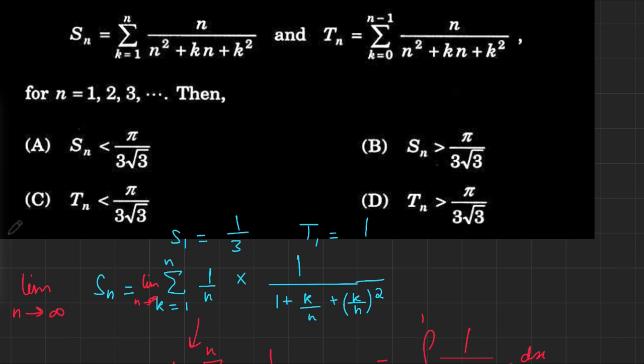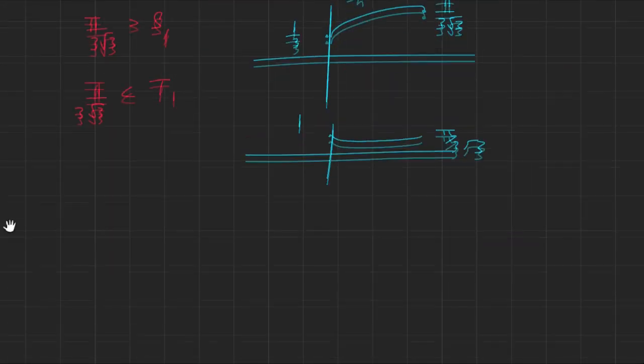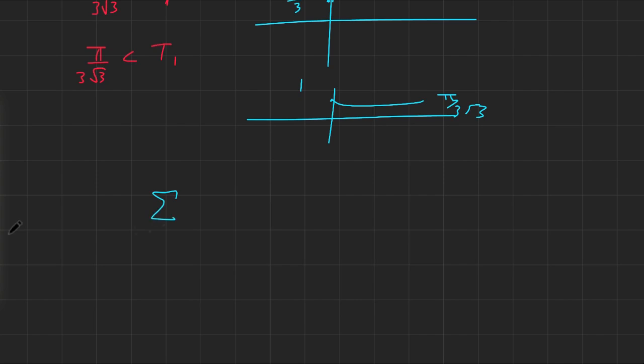So, your answer would be, S of n is always less than π over 3 root 3, and it reaches up to π over 3 root 3 as the limit is taken to infinity. So, this should be one answer, and T of n is always bigger than π over 3 root 3, and it goes all the way down as the limit as n goes to infinity is taken.